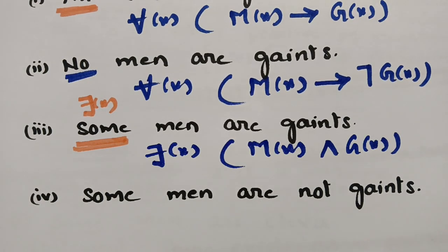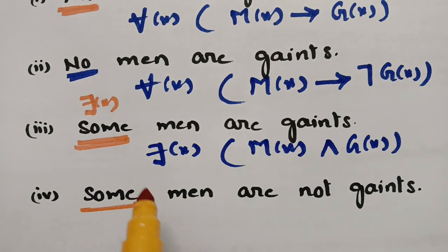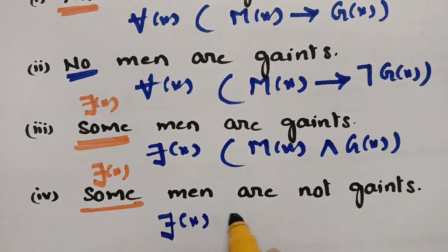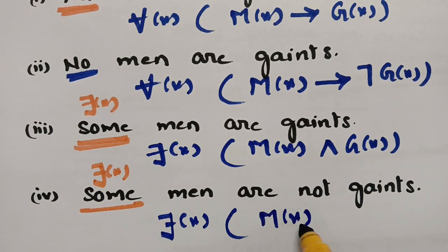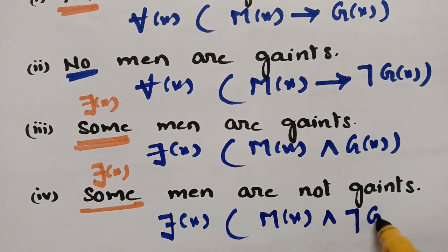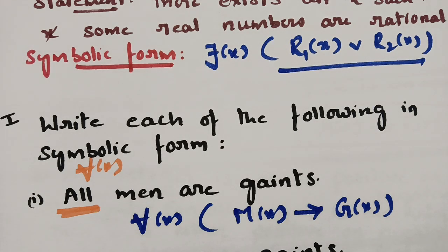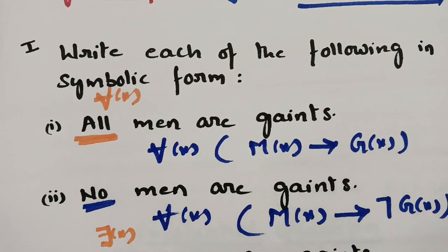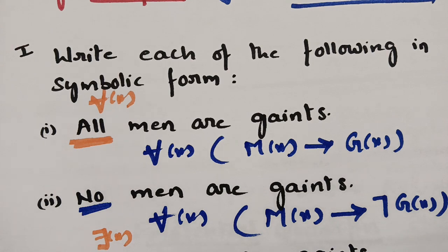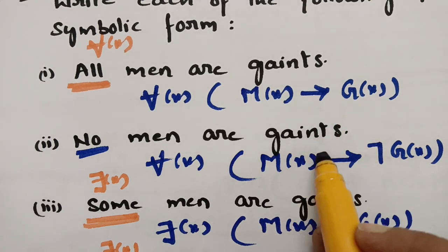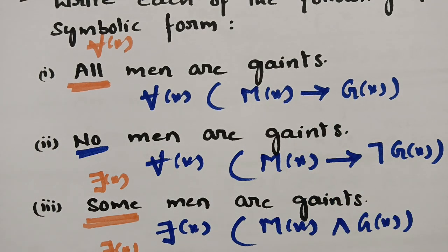Fourth: 'Some men are not jains.' 'Some' means existential quantifier — ∃x, M(x) ∧ ¬G(x), the men who are not jains. By seeing the statement we can identify whether it is universal or existential. For 'all', 'every', 'any', 'everything' — use universal quantifier. For 'few', 'some' — use existential quantifier. Generally we use implication (→) for universal and conjunction (∧) for existential quantifier.